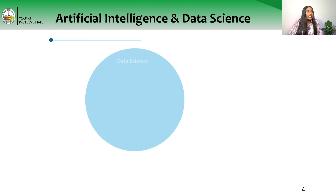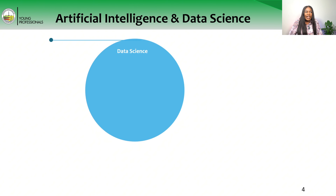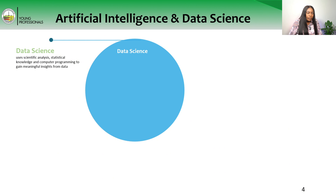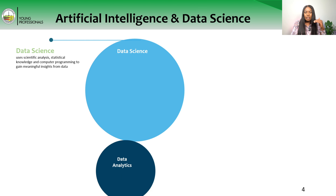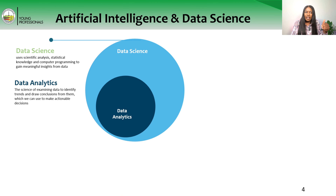Let's kick off with the first question: what's data science? Data science is the use of scientific analysis or statistics and your knowledge of programming to gain insight about your data. That's just a summary of what data science is, and as a subset of data science we have data analytics.